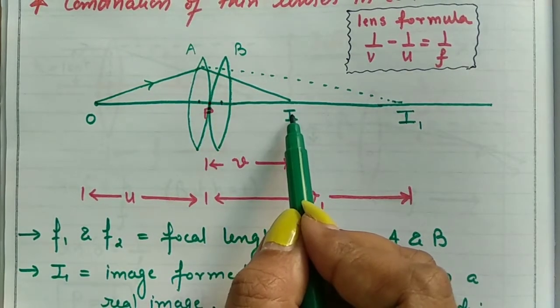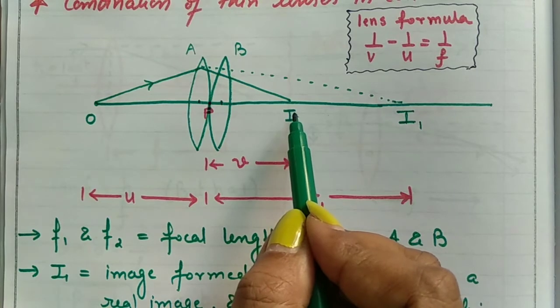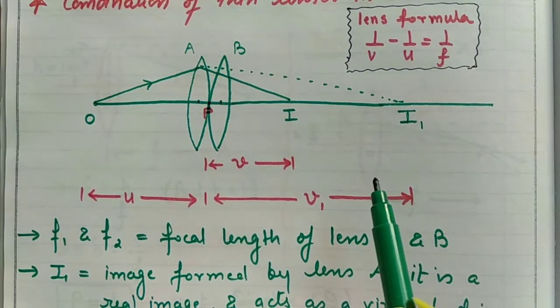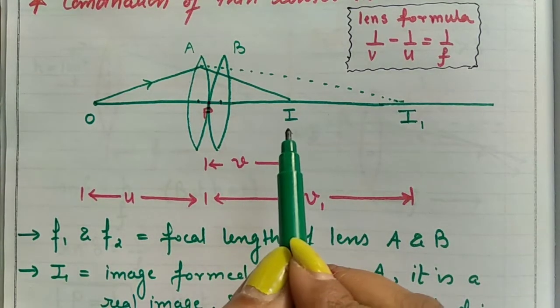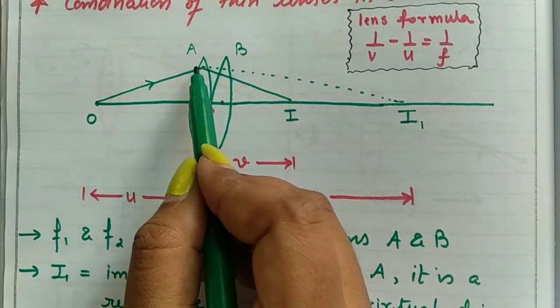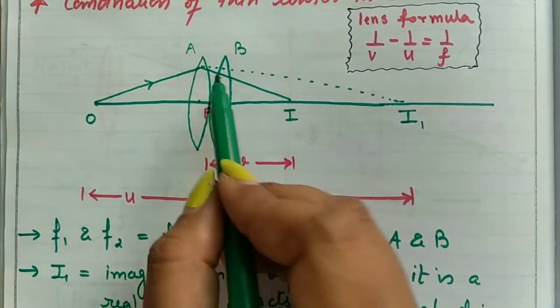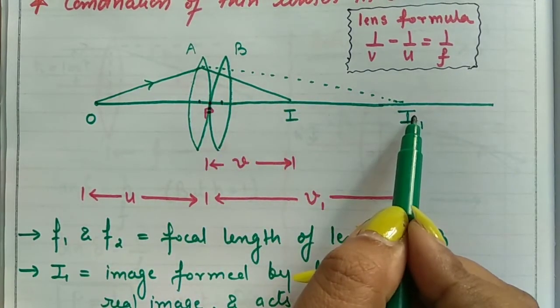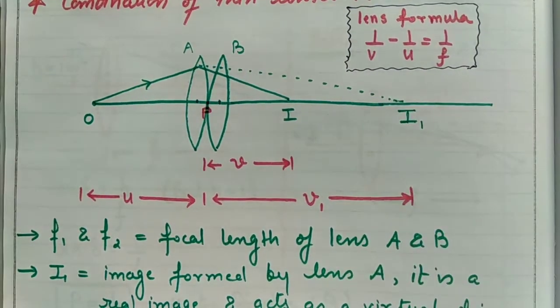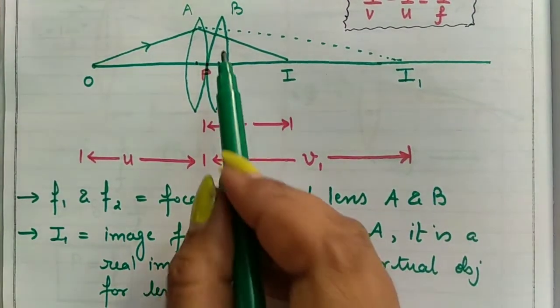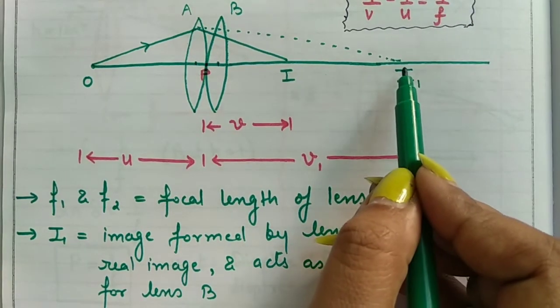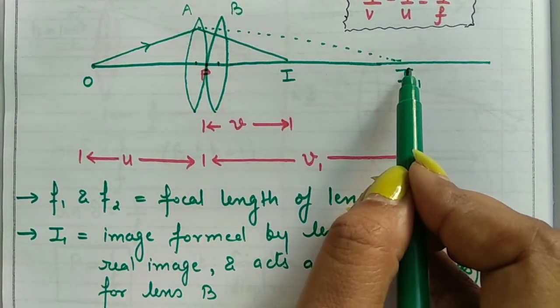That refracted ray will fall on convex lens B and this convex lens B will form a final image at I. But just to obtain the formula for the total focal length of this kind of combination, we'll see the figure in detail. Suppose if this is the incident ray, it enters lens A. First, this lens A will form the image at I1. This I1 will be a real image and it will act as a virtual object for lens B.